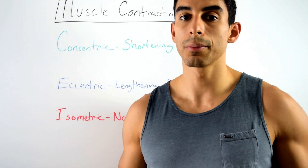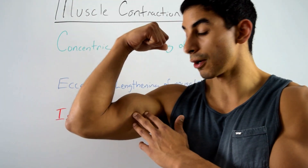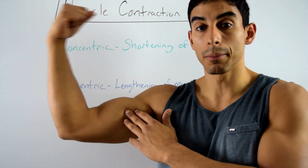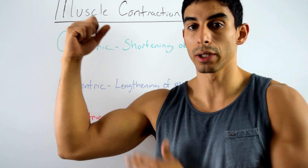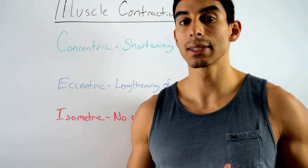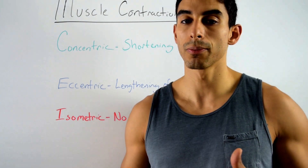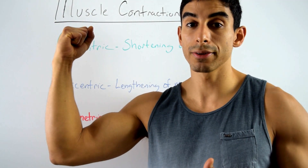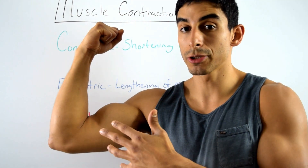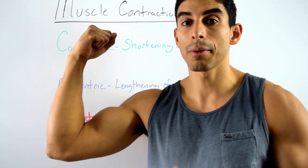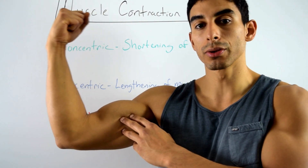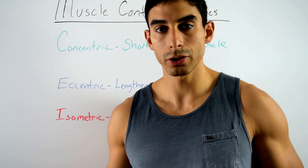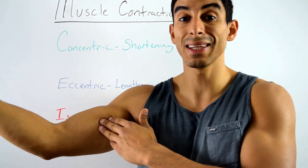The opposite of that is the eccentric contraction — completely the opposite. That occurs on the other phase when the muscle is lengthening. So as my elbow is extending, my bicep muscle is lengthening and contracting eccentrically. When an eccentric contraction occurs, the load is actually overcoming the force being applied. For example, if the load was 200 pounds and I couldn't lift it, but I was applying as much force as I possibly could, that would result in an eccentric contraction and a lengthening of the muscle.